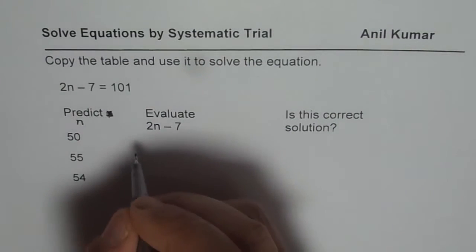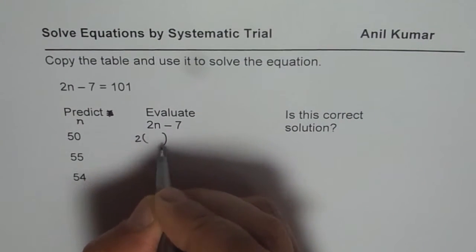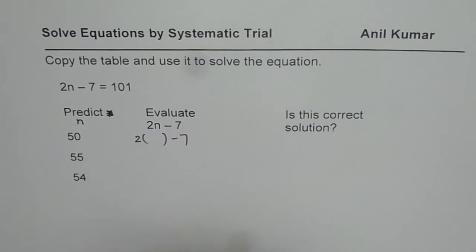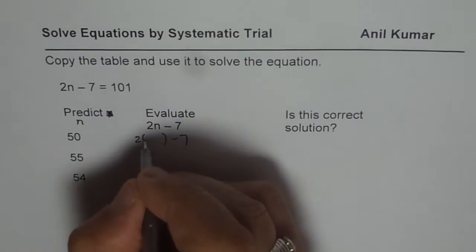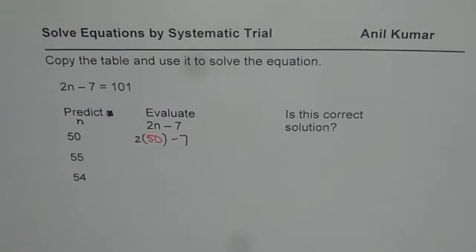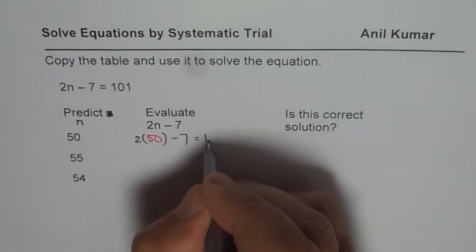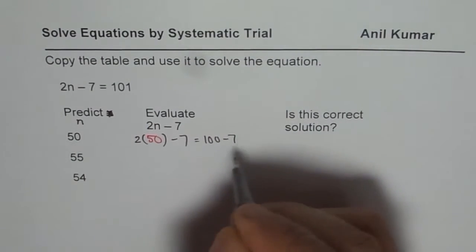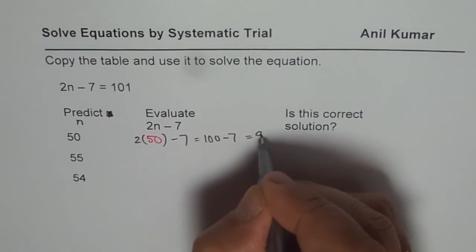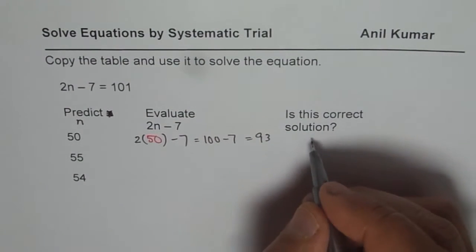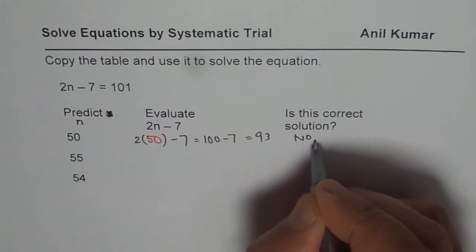Then evaluate the left side: 2 times the number which we have selected, which is 50 in our case. We say 2 times 50 and then take away 7. What do we get? We get 100 take away 7. Well, that is 93 and not 101. So we know this is not the right solution.